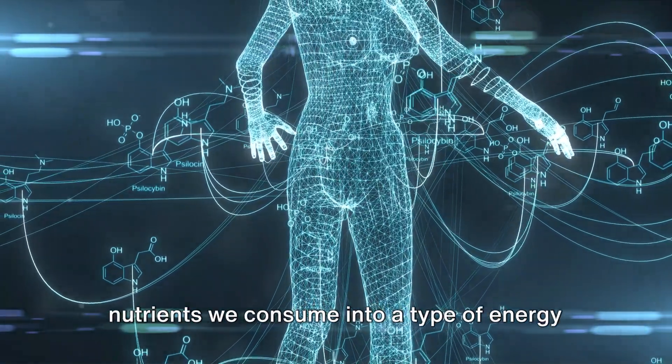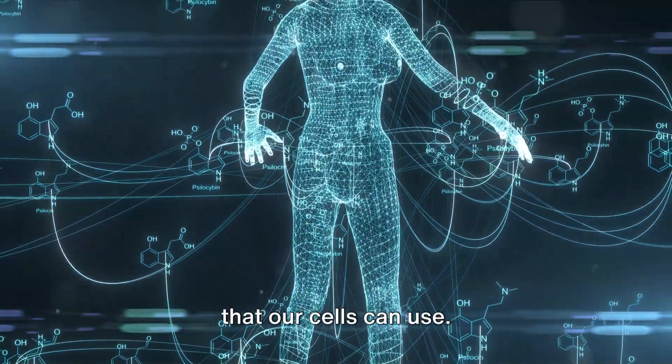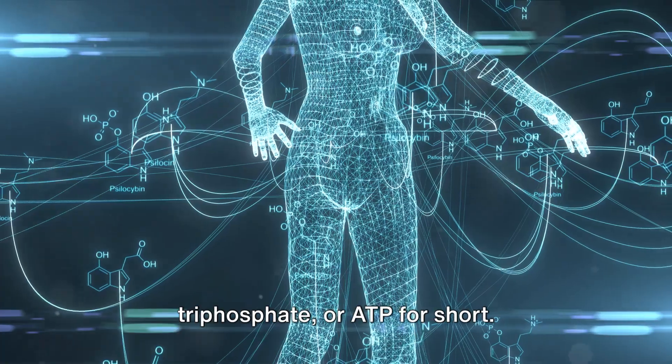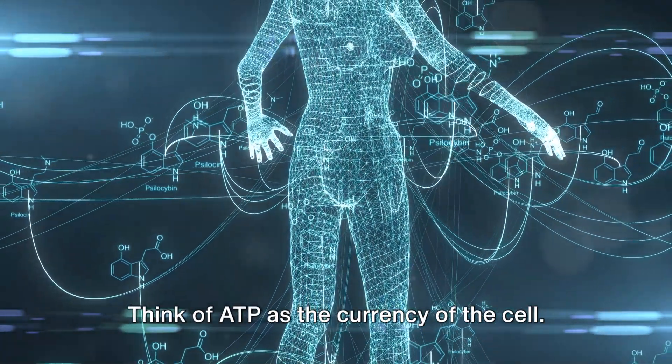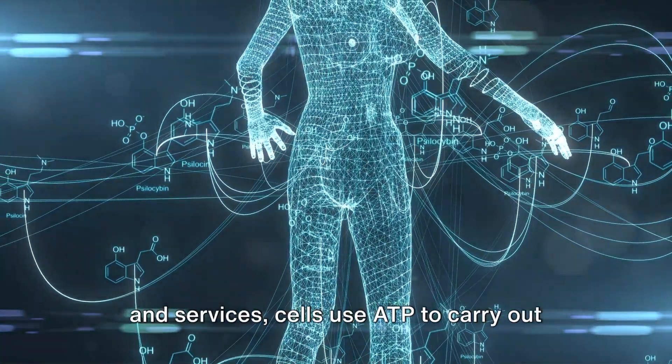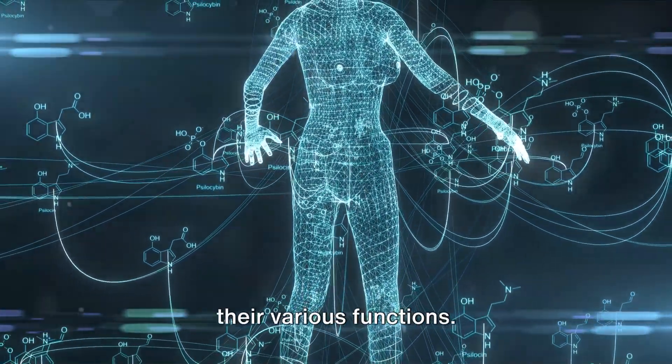They convert the nutrients we consume into a type of energy that our cells can use. This energy is called adenosine triphosphate or ATP for short. Think of ATP as the currency of the cell. Just as we use money to purchase goods and services, cells use ATP to carry out their various functions.